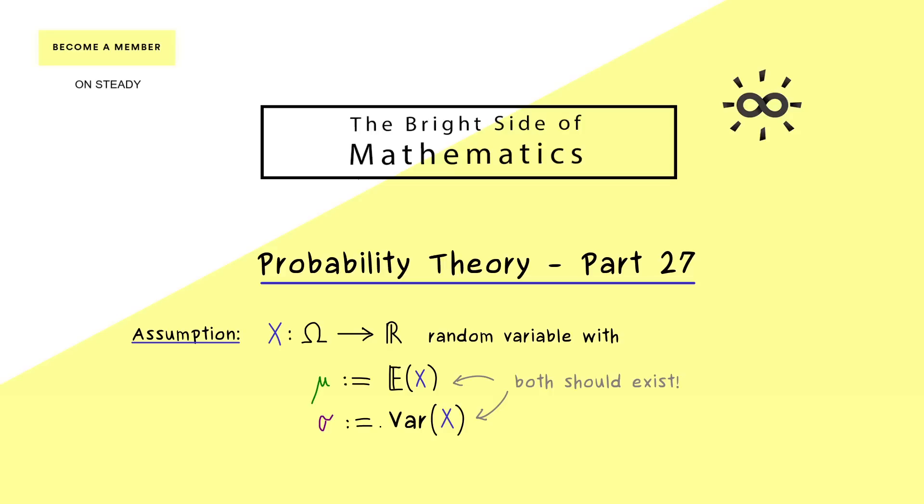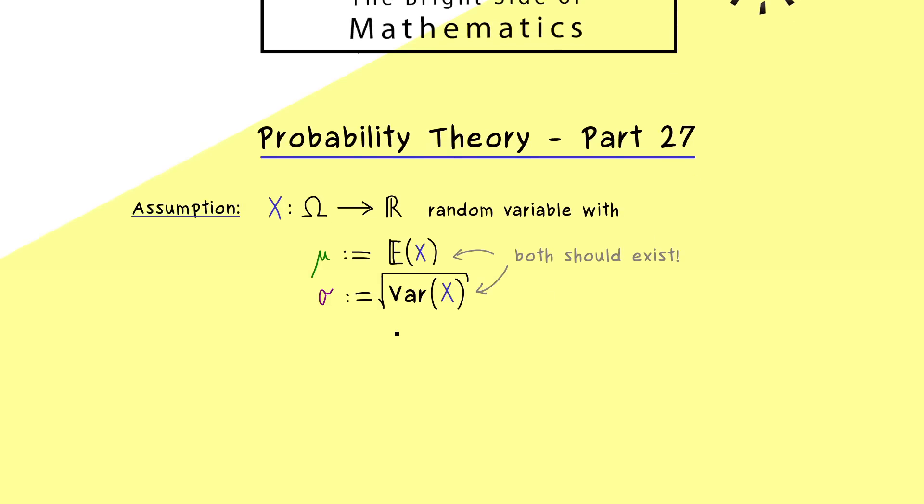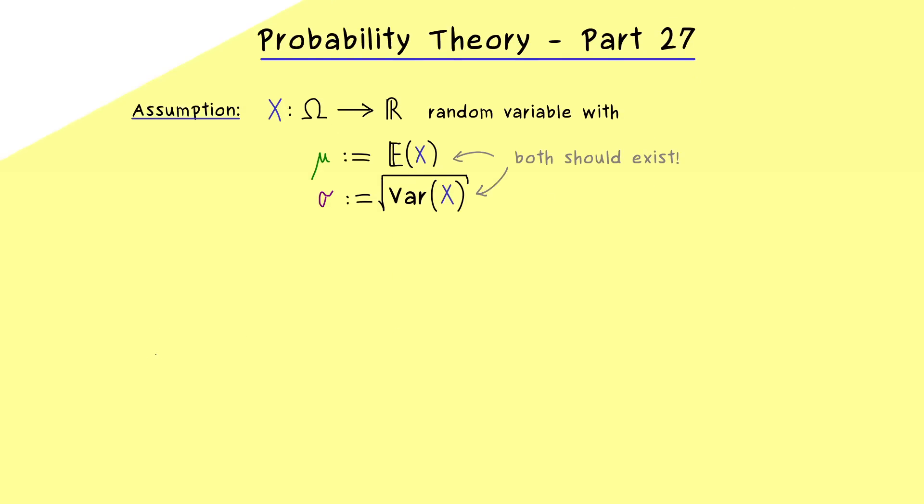Indeed, we already know that this is called the standard deviation of the random variable X. In particular, you should know that these are common notations for the normal distribution. However, here our random variable X can have any distribution. For example, in the continuous case, we could have any probability density function here for X. So maybe it's not so complicated, it might just look like this. And then depending on how symmetric this function is, we would find the expectation here somewhere in the middle.